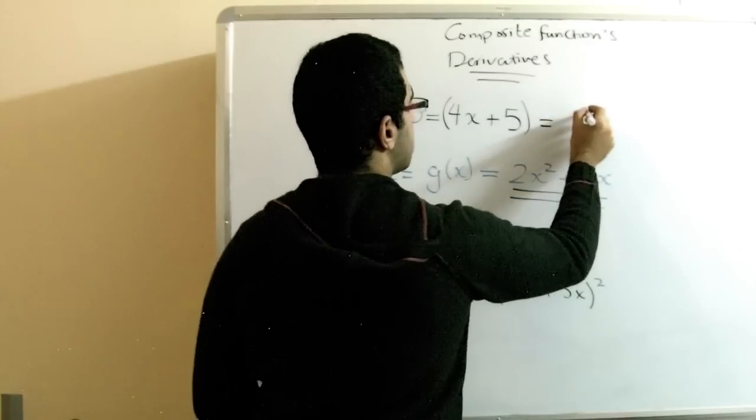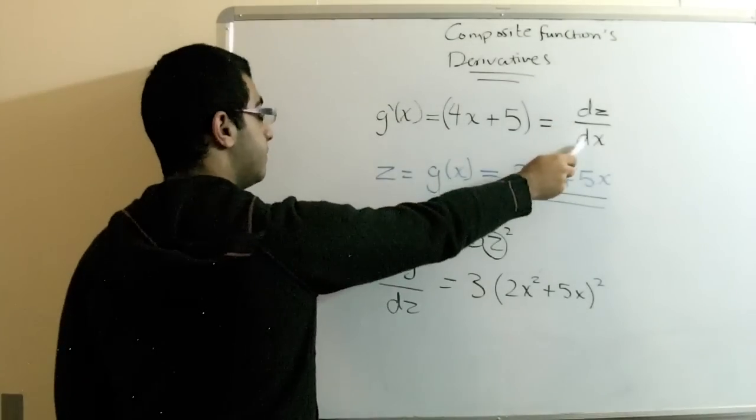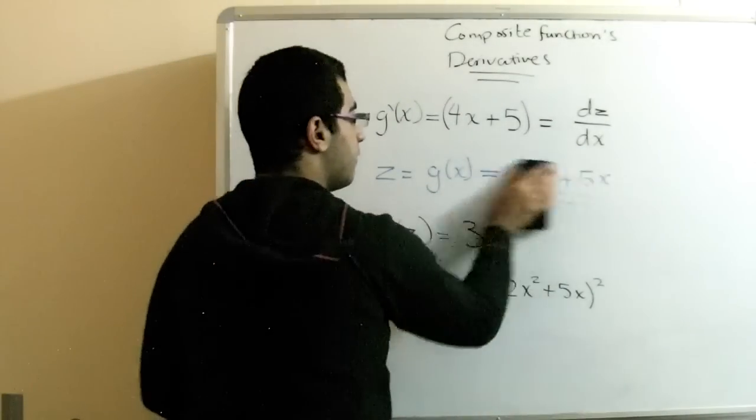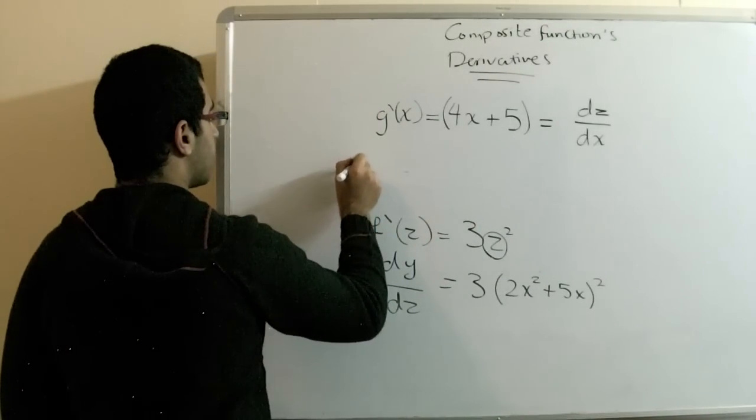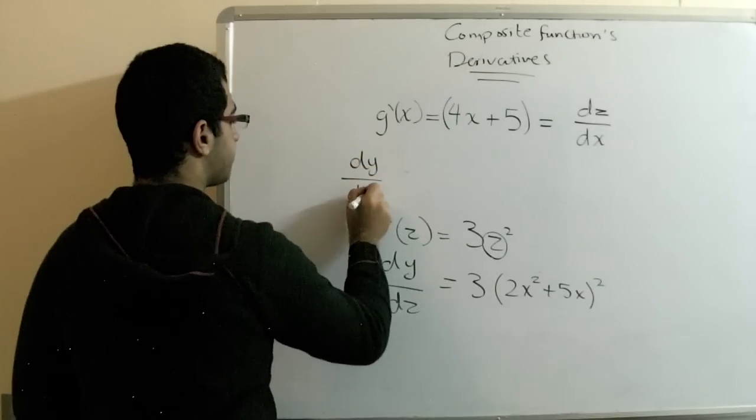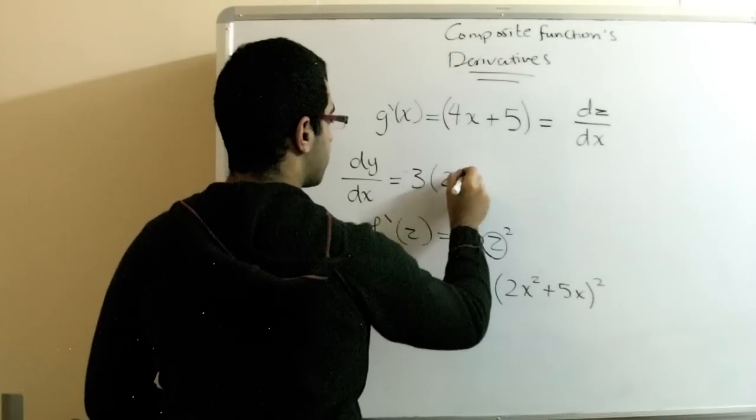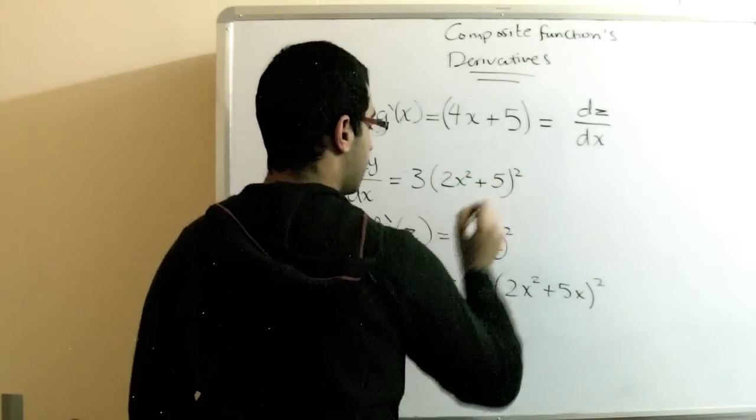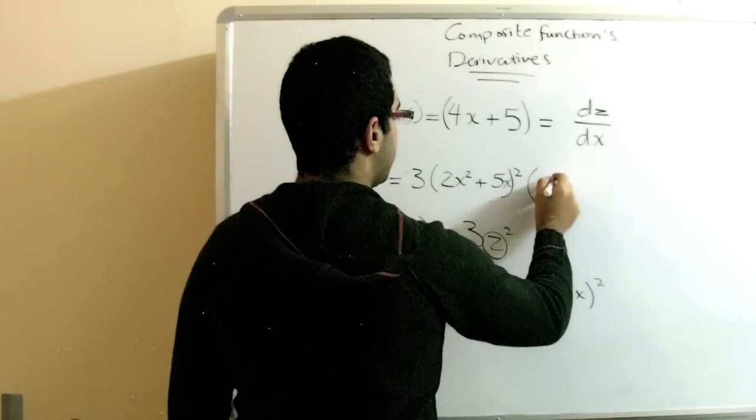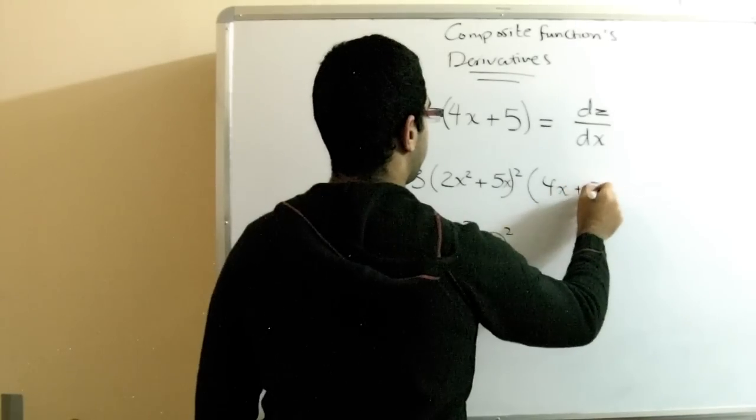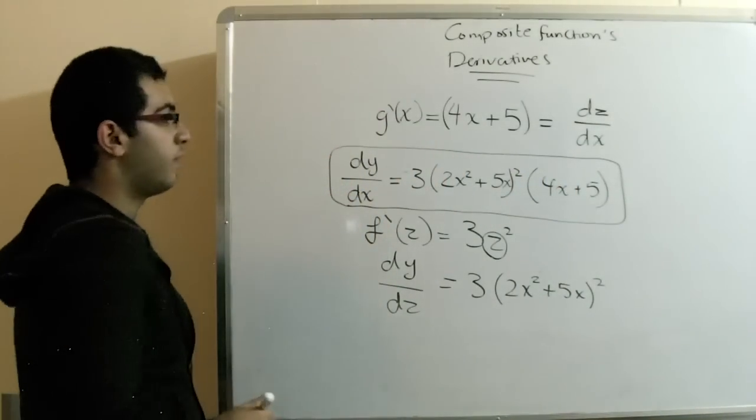And this also equals the dz over dx. Finally, we will multiply them together to write dy over dx equals 3(2x squared plus 5x) squared times (4x plus 5). And this is the derivative of our function.